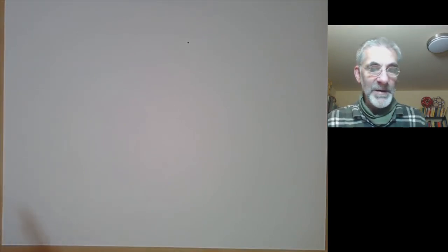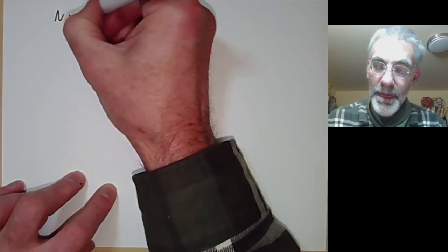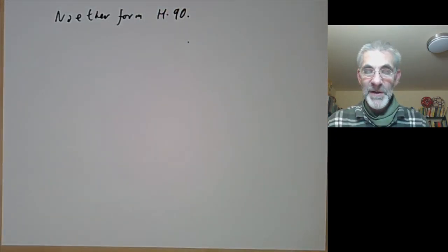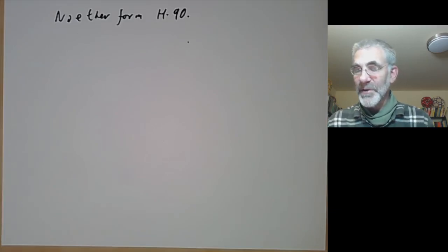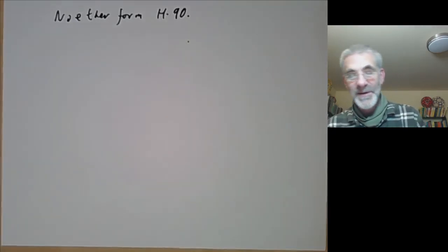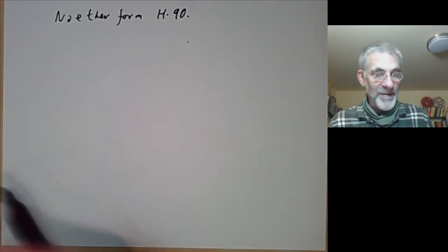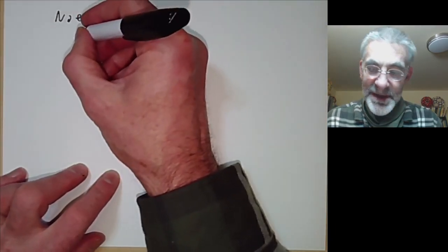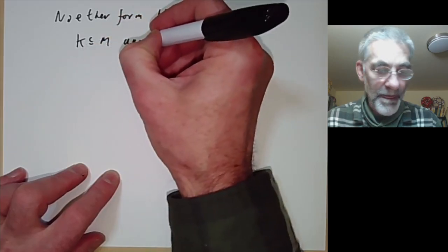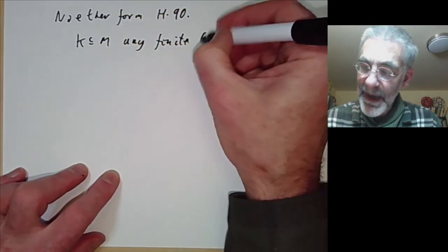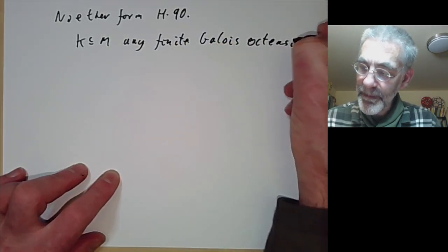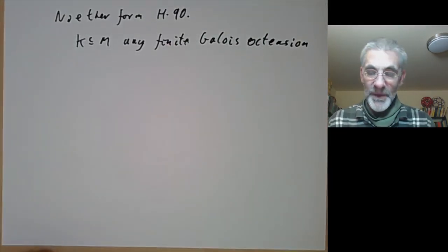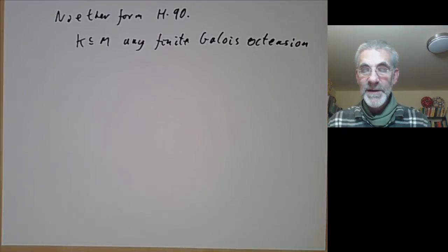Now we go on to Noether's form of Hilbert's Theorem 90. Life is really unfair: not only was Hilbert's original Theorem 90 not really due to Hilbert, but Noether's version is also always called Hilbert's Theorem 90 and everybody forgets about Noether. Noether's theorem says: suppose K ⊂ M is any finite Galois extension. Then any 1-cocycle is a coboundary.